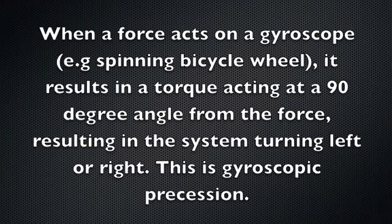When a force acts on a gyroscope, it results in torque acting at a 90 degree angle from the force, resulting in the system turning left or right. This is gyroscopic precession.